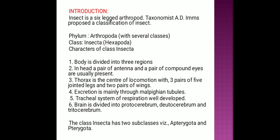Excretion is mainly through Malpighian tubules. A tracheal system of respiration is well developed. The brain is divided into three parts: the protocerebrum, the deutocerebraum, and the tritocerebrum. The class Insecta has two subclasses.